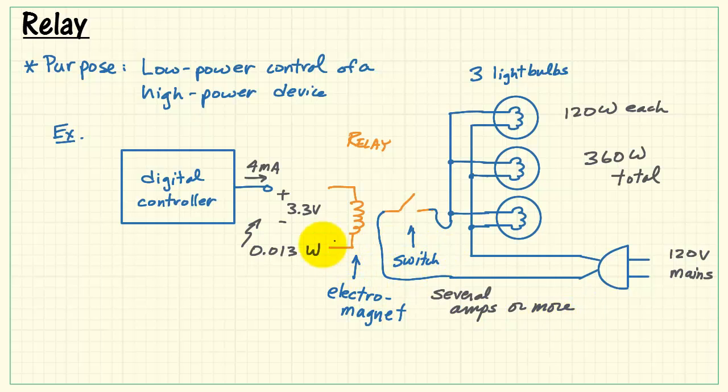Relays can generally handle amps or more. The electromagnet requires about a tenth of an amp to activate the switch, which is still considerably higher than what's available from the digital controller.